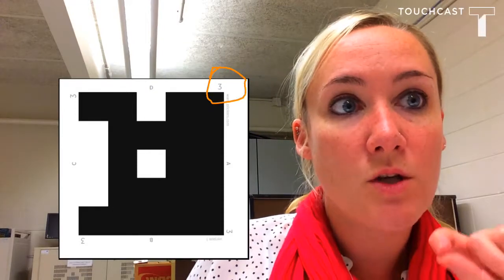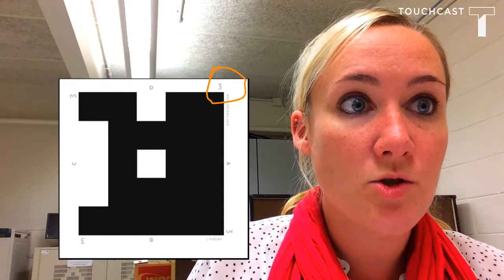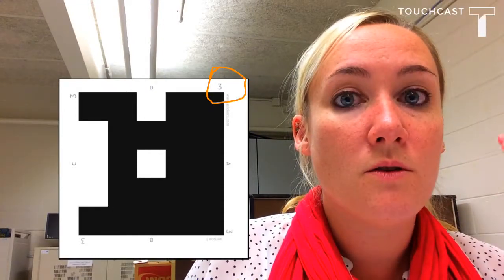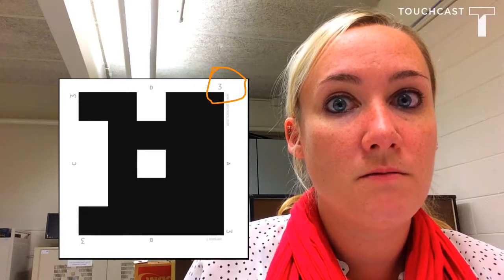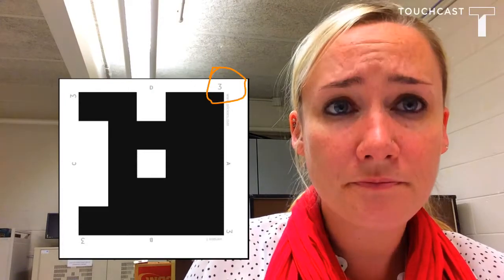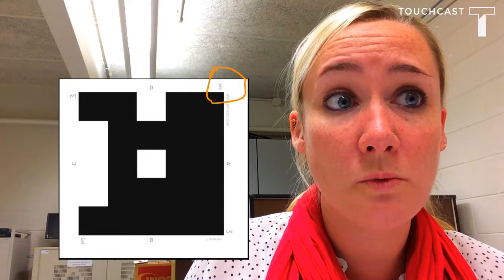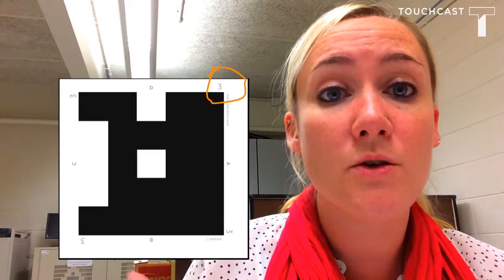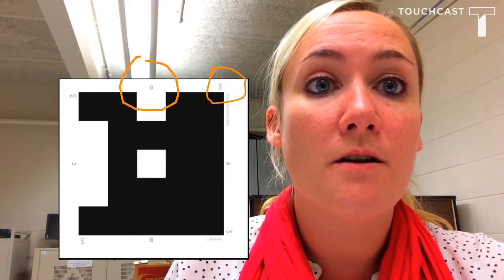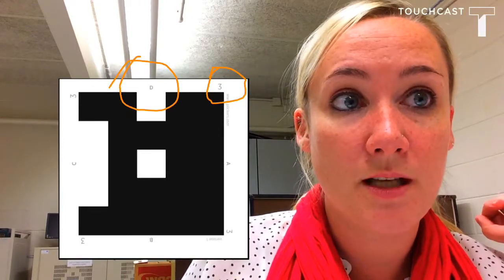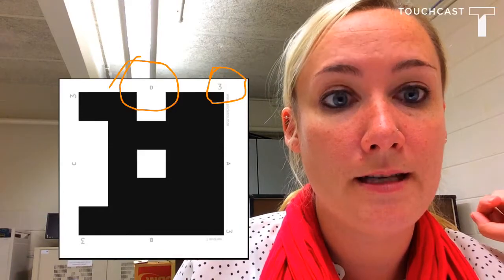So in this instance, the student number is 3. So then whenever you scan this image, the computer will know what student is being scanned right now. And then how we know the answer is, the correct answer is the letter that's facing up. So in this case, the student is selecting D.